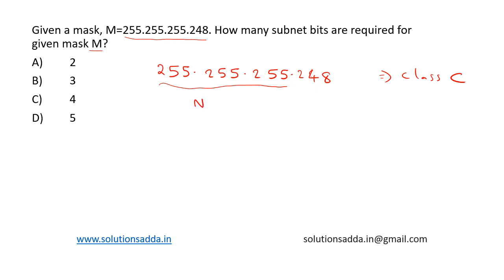And the fourth octet represents the host part. Now this host is further divided into subnet bits as well as host bits, and we are asked to find out how many subnet bits are required for the given mask M.